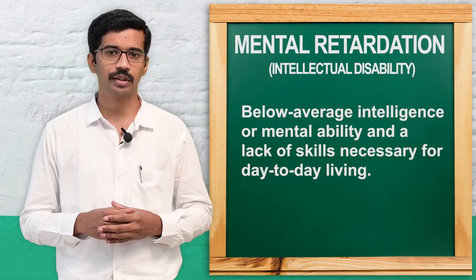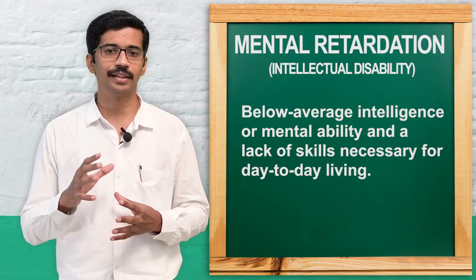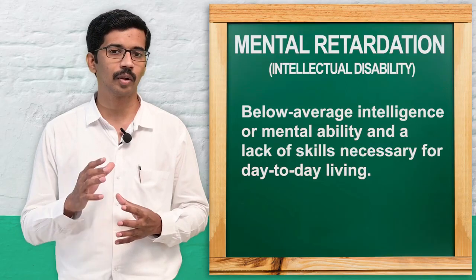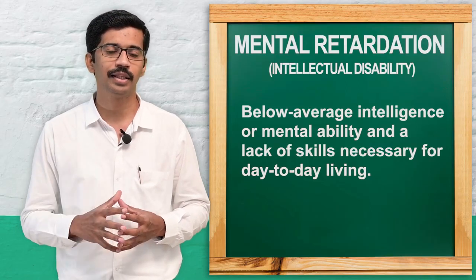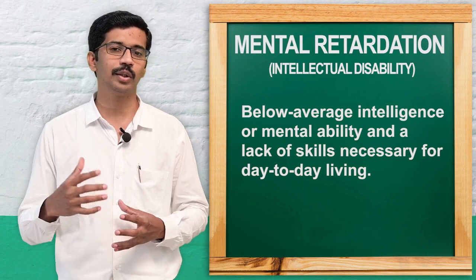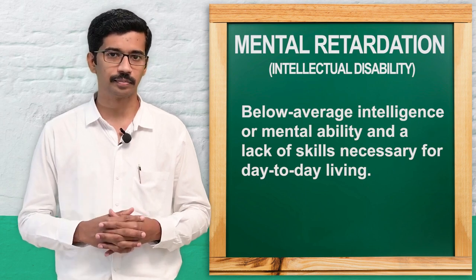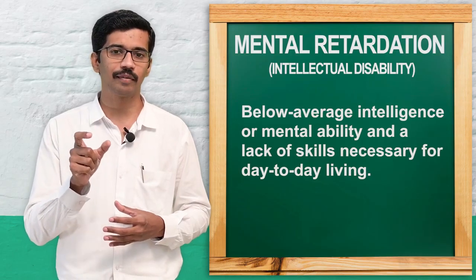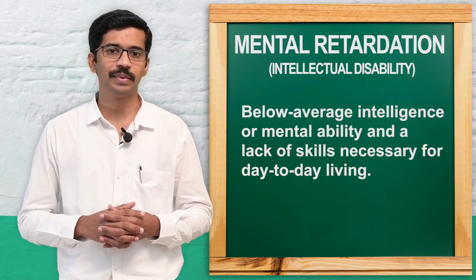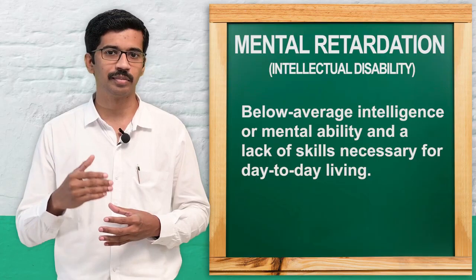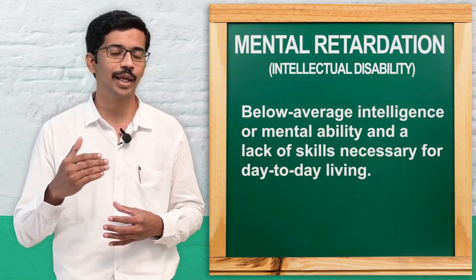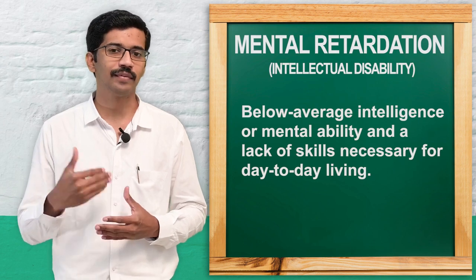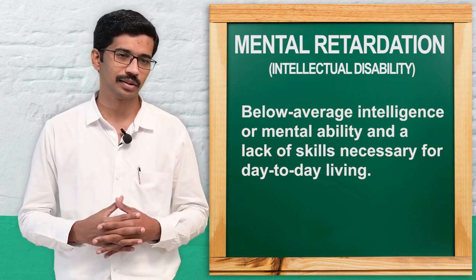Now we will see the definition of mental retardation. Mental retardation is defined as significantly sub-average or below-average intellectual ability that is manifested during the developmental period. Sub-average or below-average means the intelligence quotient, or IQ, of a person will be less than 70.